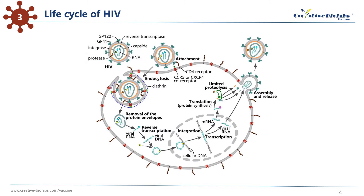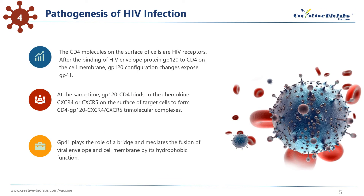HIV selectively invades CD4 molecules, including T4 lymphocytes, monocytes, macrophages, dendritic cells, and so on. The CD4 molecules on the surface of cells are HIV receptors. After the binding of HIV envelope protein GP120 to CD4 on the cell membrane, GP120 configuration changes expose GP41. At the same time, GP120-CD4 binds to the chemokine receptors CXCR4 or CCR5 on the surface of target cells, to form CD4-GP120-CXCR4/CCR5 tri-molecular complexes. GP41 plays the role of a bridge, and mediates the fusion of viral envelope and cell membrane by its hydrophobic function, resulting in cell destruction.